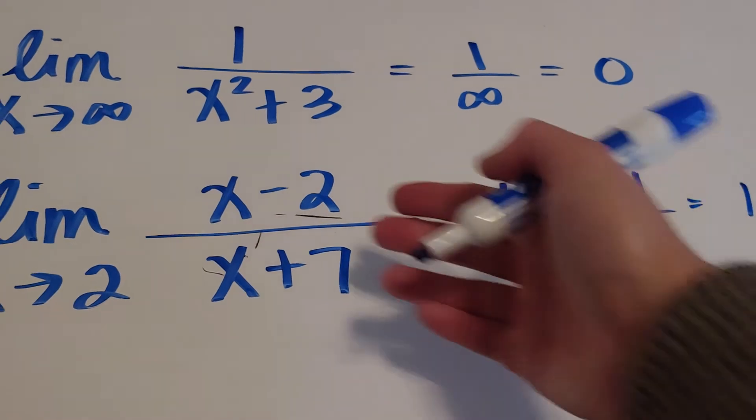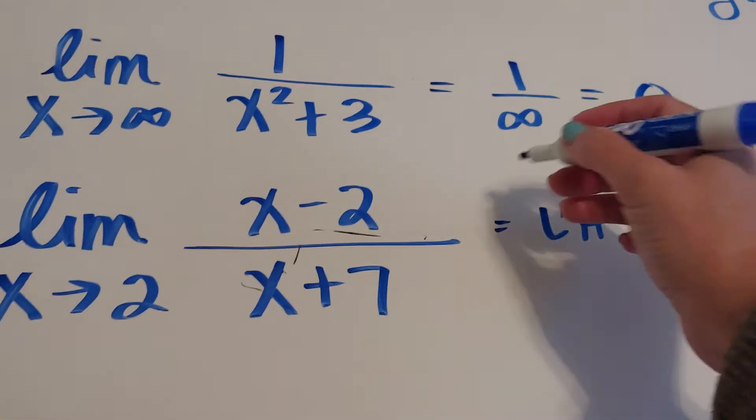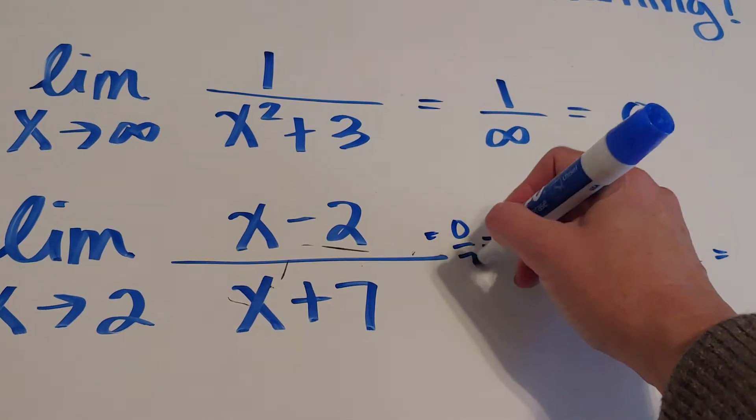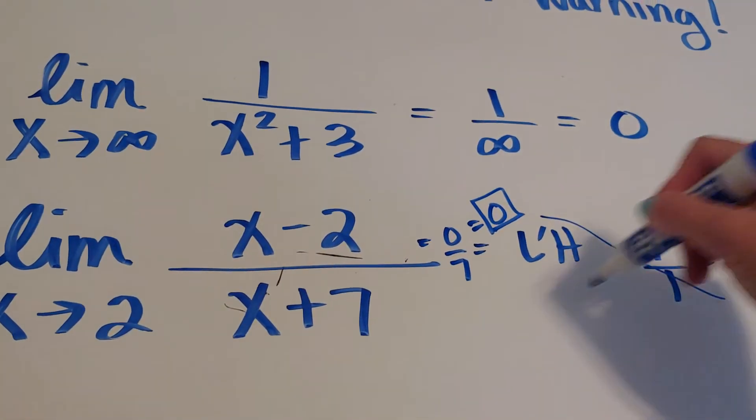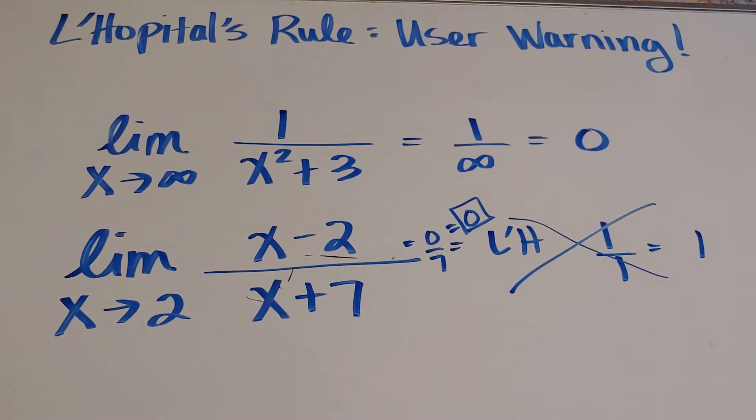That's not our answer. This is not 0 over 0. If I plug in 2, I'm going to get 0 over 7, which is just 0. So again, here's somebody who just went on autopilot and tried to use L'Hopital's Rule when they couldn't.